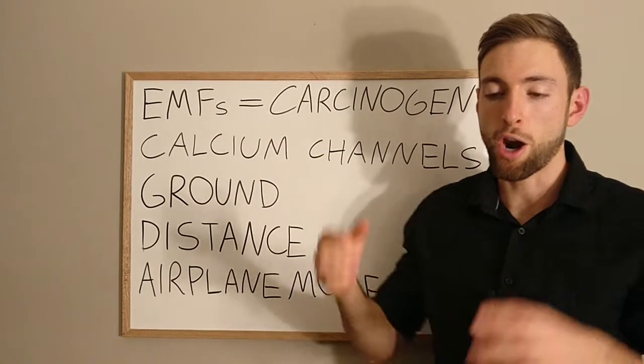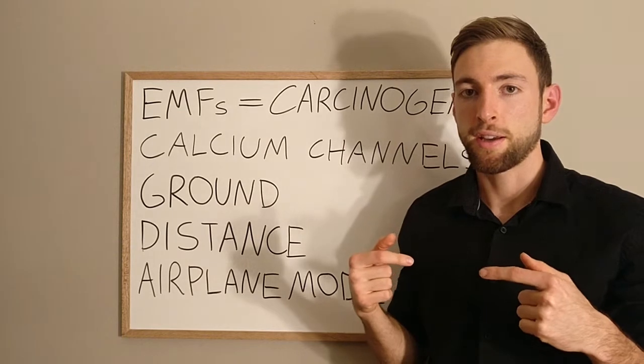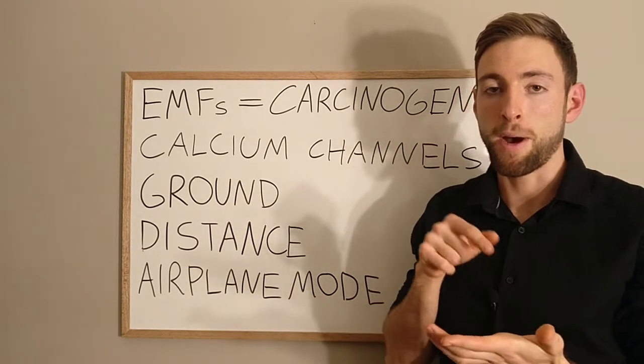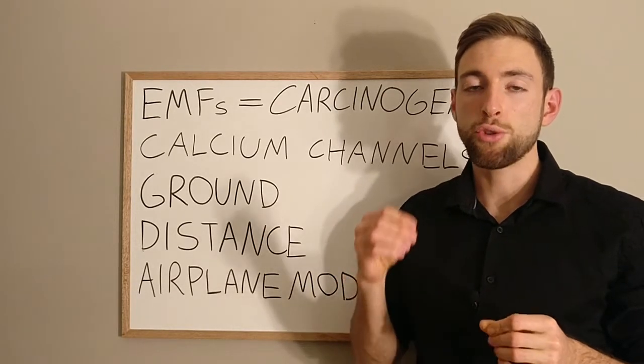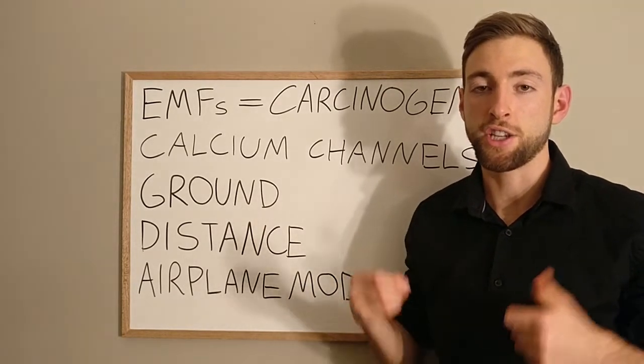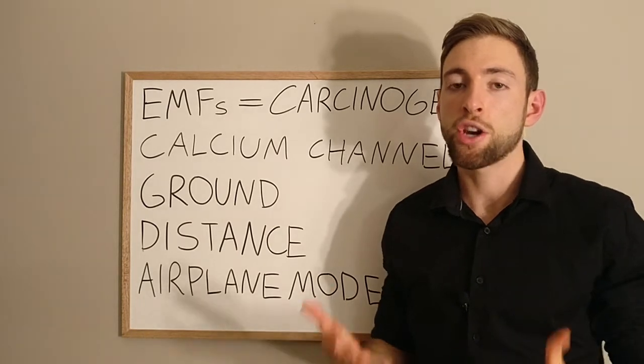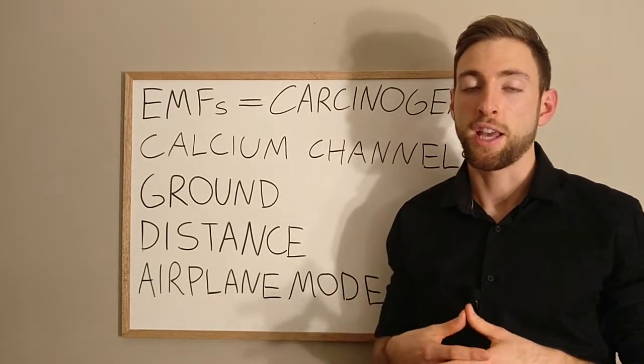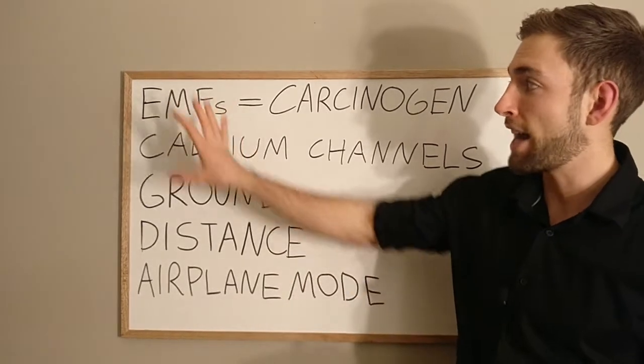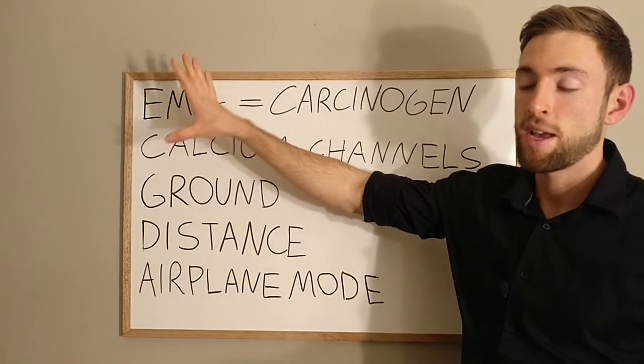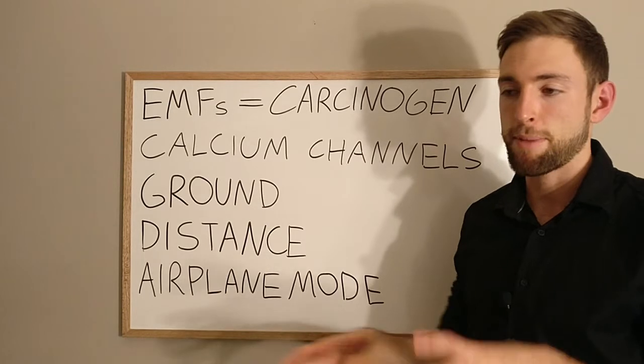We have to remember that our body is electric. It functions on magnetism and electronics. It is always using a low level electricity to run everything. Our nervous system is electricity moving from one cell to another. So we want to understand that when we're adding in more electricity to the system, this messes with things. This messes with our functioning.